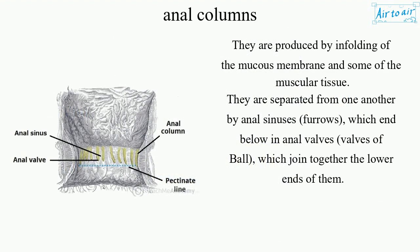They are produced by infolding of the mucous membrane and some of the muscular tissue. They are separated from one another by anal sinuses — furrows — which end below in anal valves, the valves of Ball, which join together the lower ends of the columns.